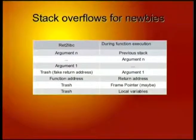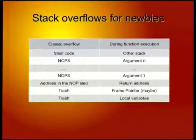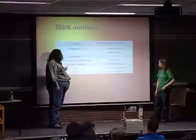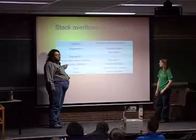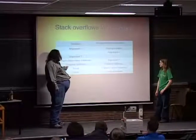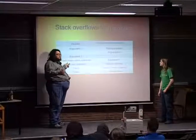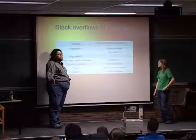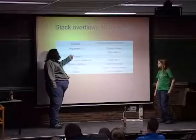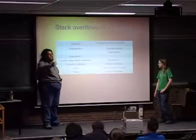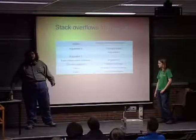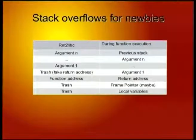That's the classical stack overflow. We also have the return-to-libc attack, which is mostly the same. We put some trash, put the address of the function we want called, then a fake return address — because maybe we don't expect our function to return if we're using exec — and some arguments that will be passed to the function.